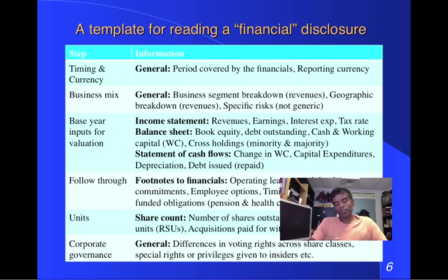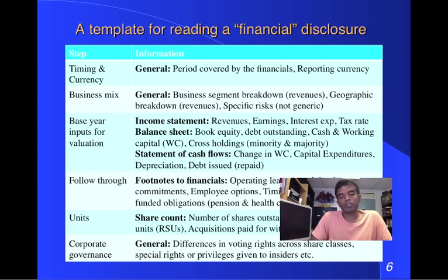Start with the income statement. The key numbers you want at a minimum: revenues, operating earnings, net income, interest expenses, and the tax rate the company is paying on its overall income. Usually annual reports and 10-Ks will give you this information for two or maybe even three years — take into account all of those, because there is value in knowing the history of a company. Next step: go to the balance sheet. Start with the shareholders' equity line item, which incorporates retained earnings, paid-in capital, and all the stuff that's supposed to go into equity.